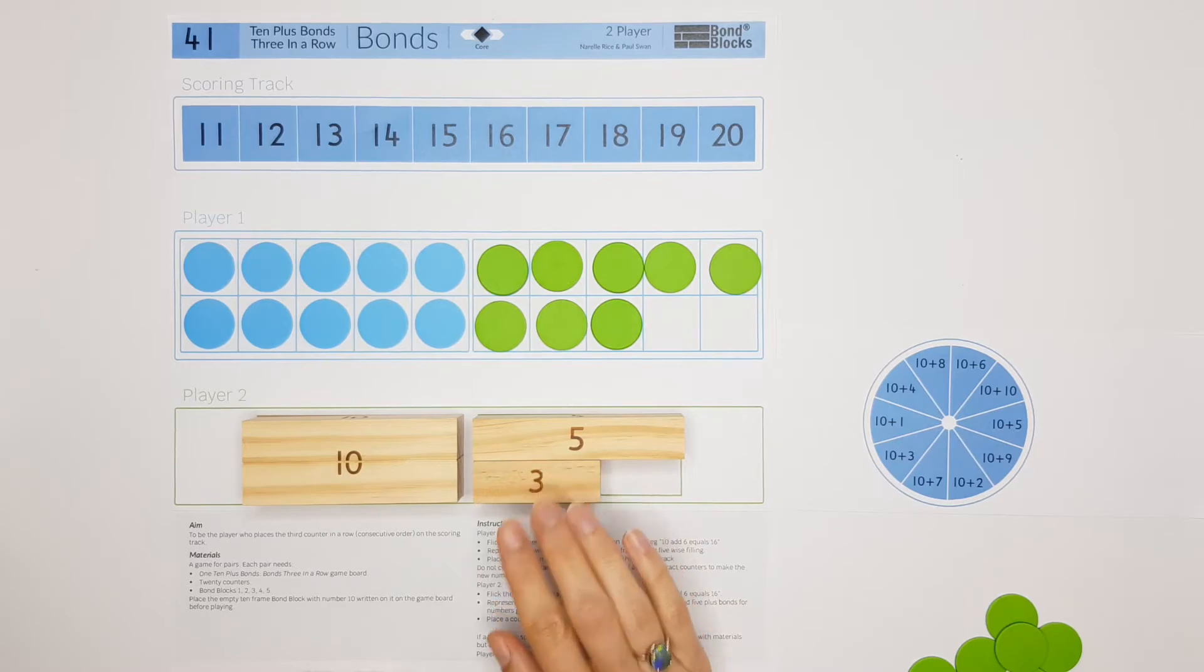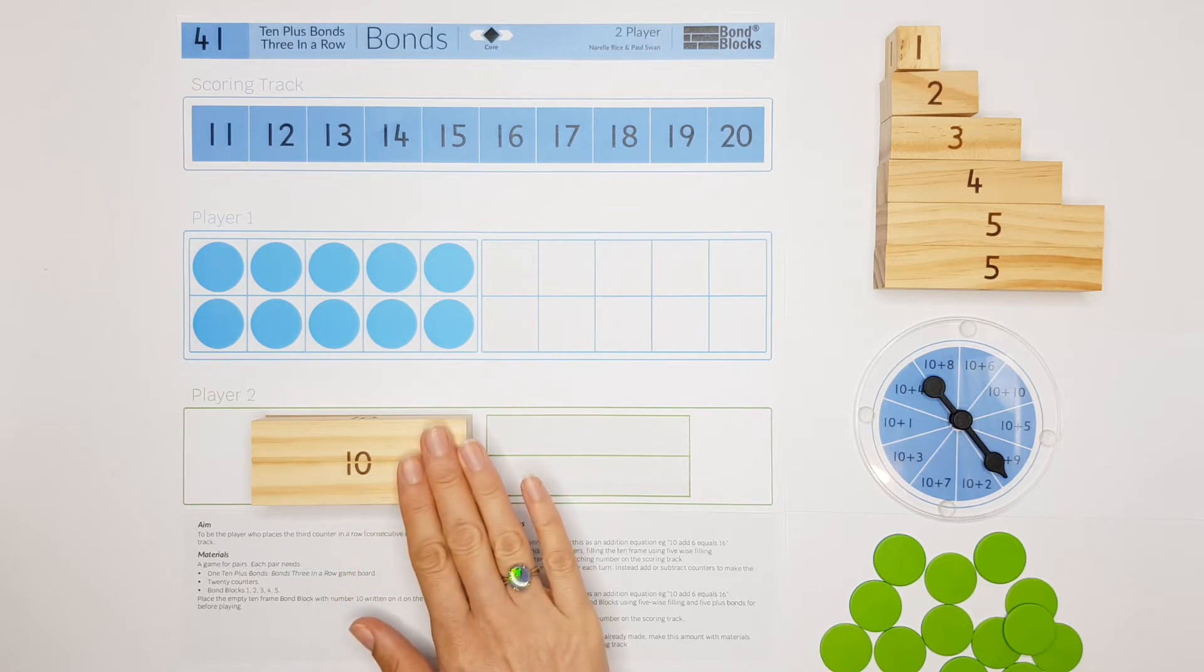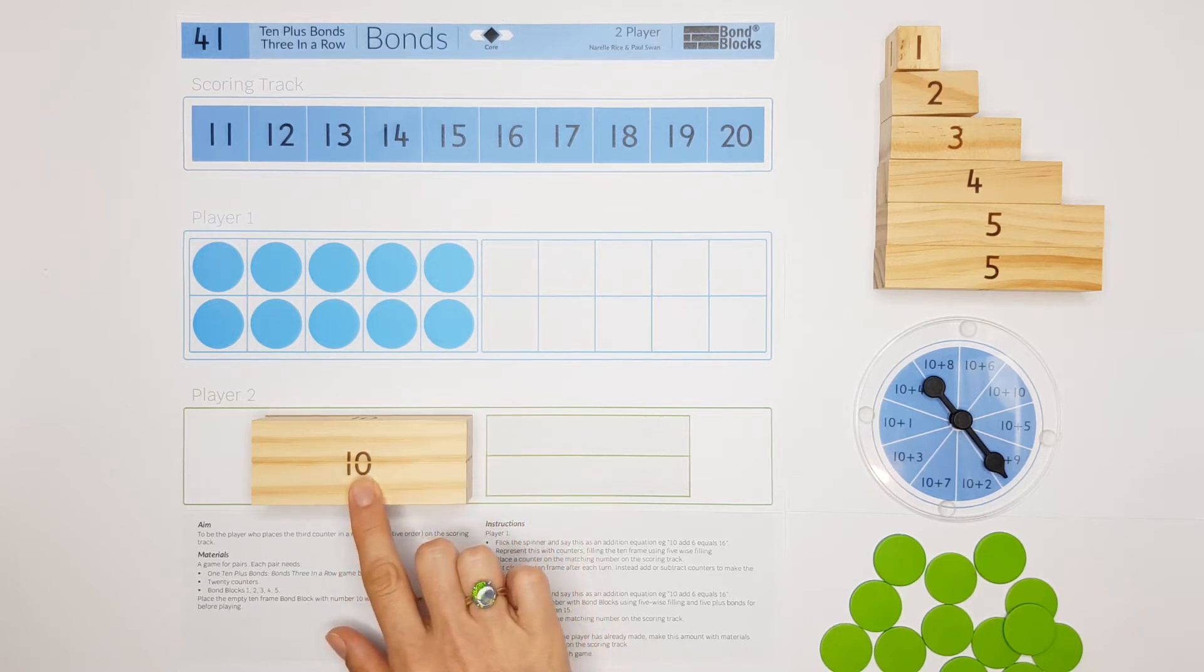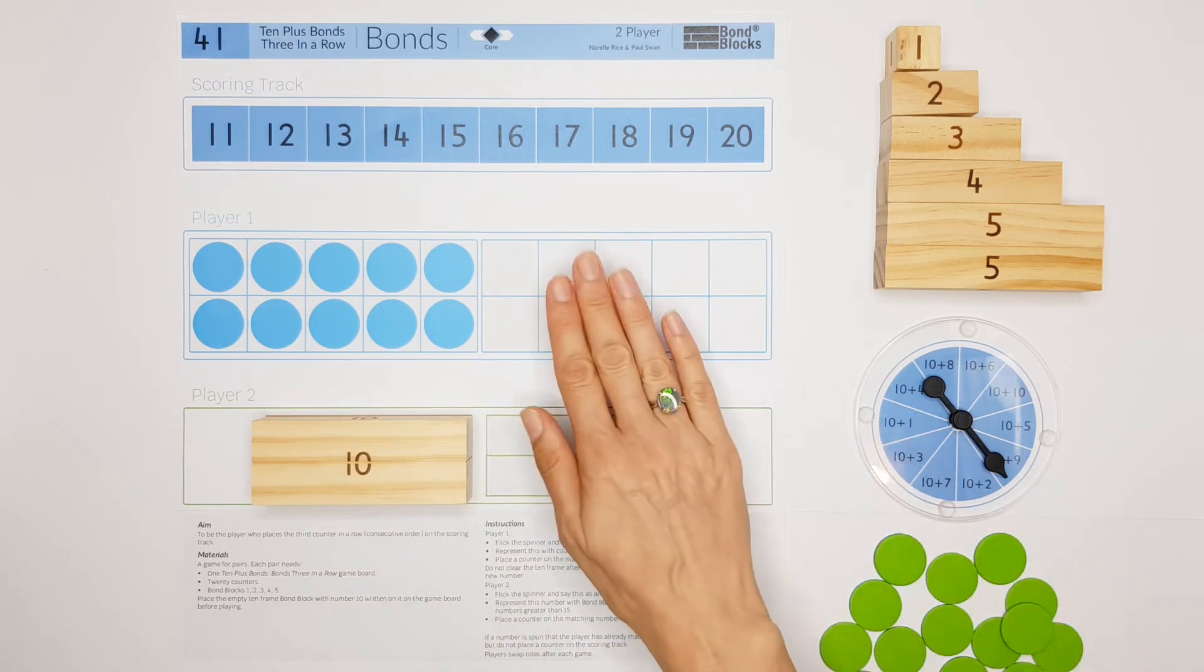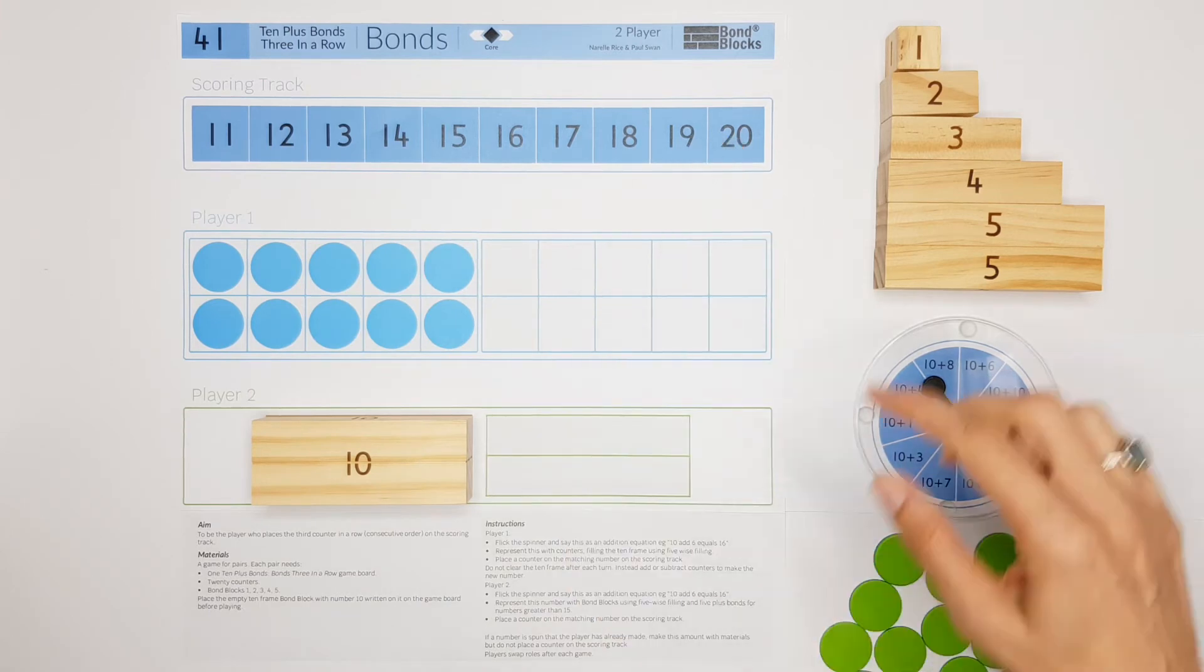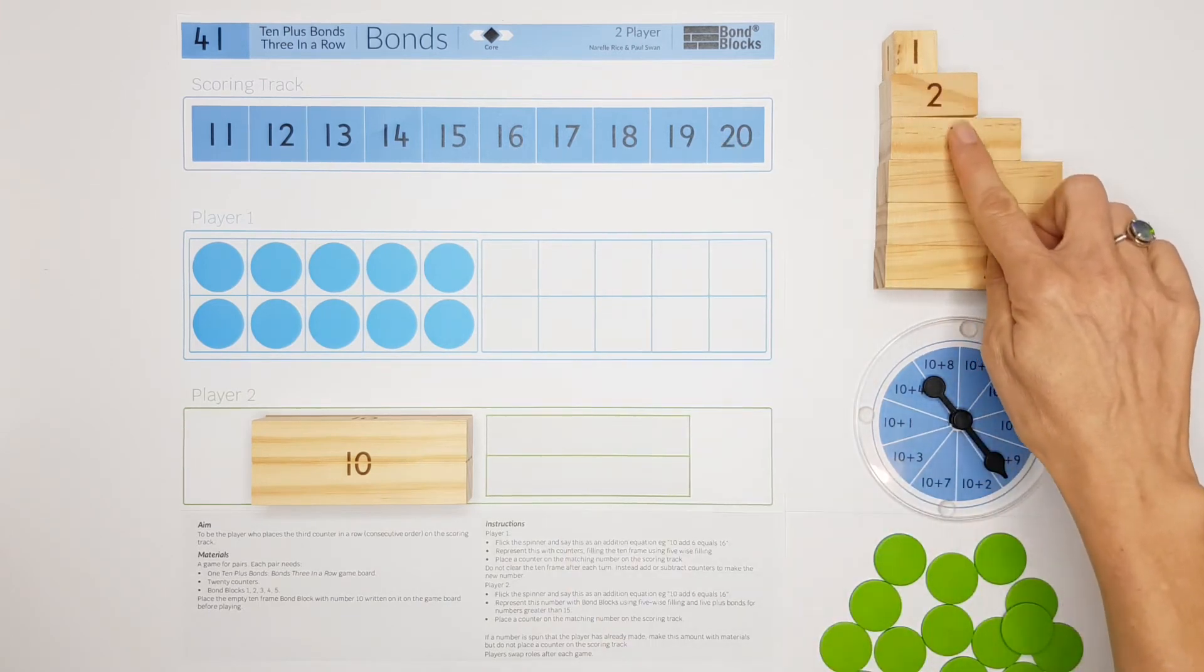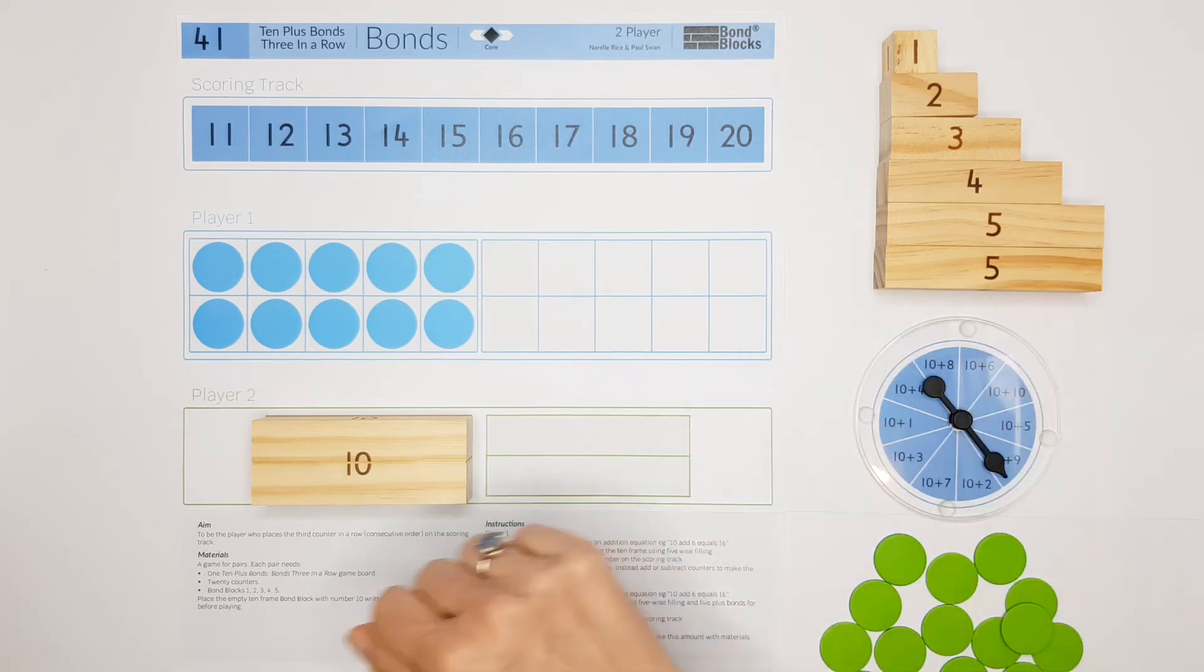Let's begin to complete this activity. You need to place your empty 10-frame block with the number 10 written on it on the frame. You need 20 counters: 10 to place on the 10-frame and 10 for the scoring track. You also need one of each block from one to five and an additional five block.